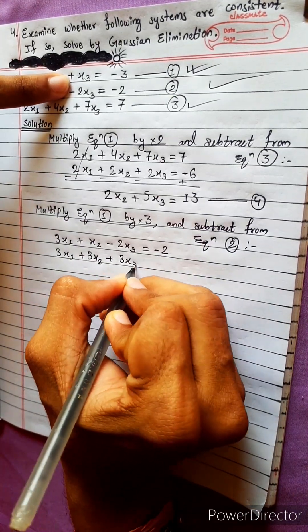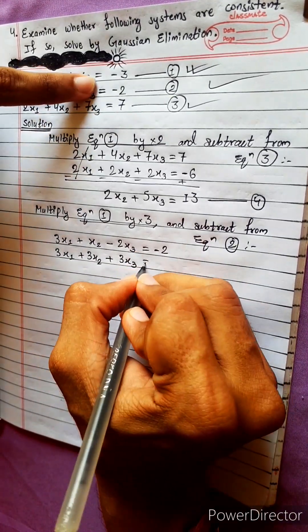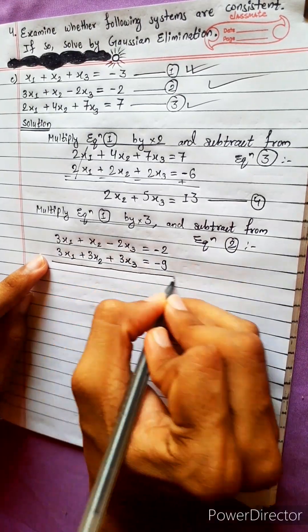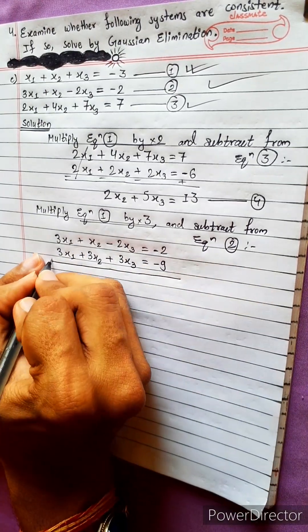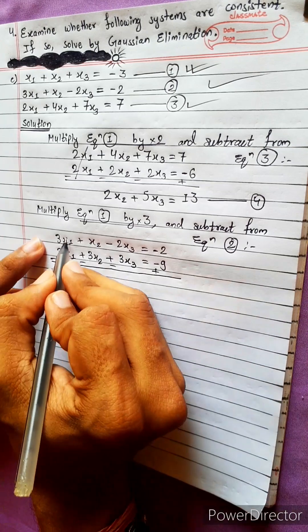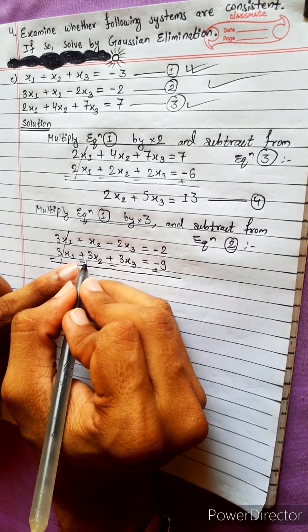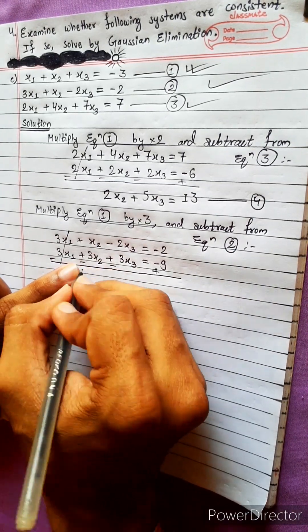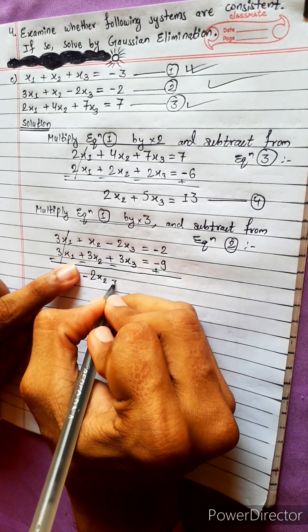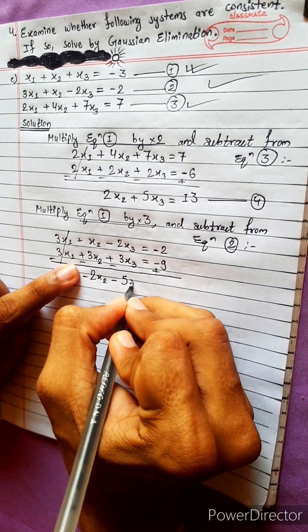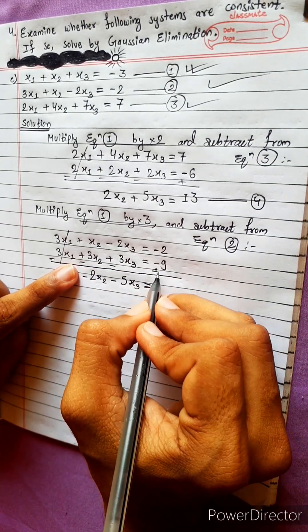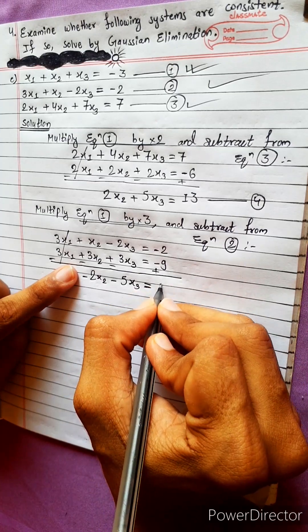After subtraction, the x1 terms cancel. We get minus 2x2 minus 5x3 equals minus 7. This is equation 5. Rearranging: 2x2 plus 5x3 equals 7.